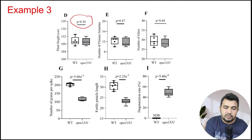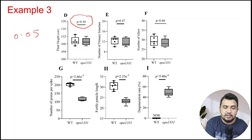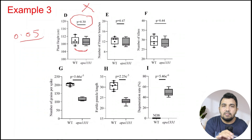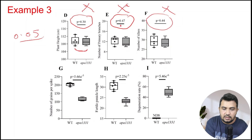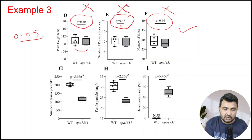In another example, where the p-value is 0.30, it is greater than 0.05, so the wild type and mutant type are not significantly different. Similarly, p-value 0.47 is also not significant, and p-value 0.4 is also not significantly different. After the decimal there is no zero, so all three values are greater than 0.05 and not significant.